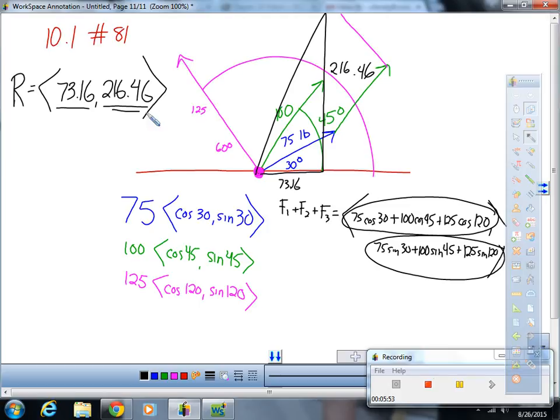So, to find that angle, we would just do, well, let's see, how will we find this angle right here in trig? We have the opposite and the adjacent, so we'd say tangent of theta is 216.46 over 73.16. And you take the tangent inverse of both sides, and you get theta is about equal to 71.3 degrees.